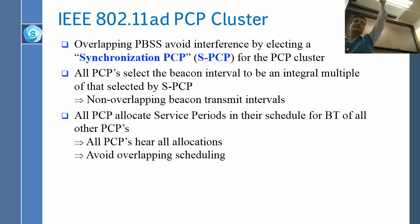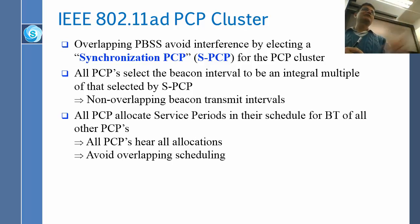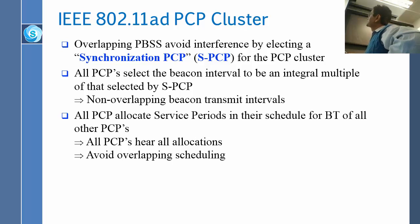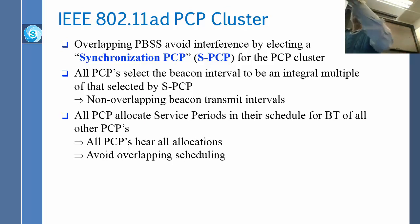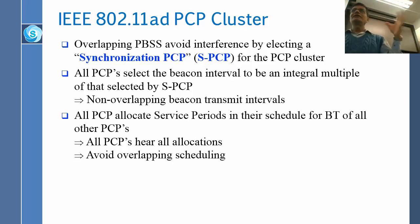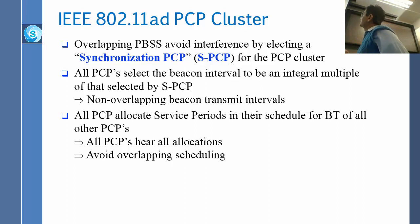On top of the PCPs, there is another layer — the S-PCP says: PCP number one, your turn; PCP number two, your turn; PCP number three, your turn. All PCPs select their beacon interval to be an integral multiple of that selected by the S-PCP, so everything has to be aligned and synchronized. You get one slot, two slots, three slots, but everything has to be a multiple of slots so it is easy to cycle back. Non-overlapping beacon transmission intervals are maintained.